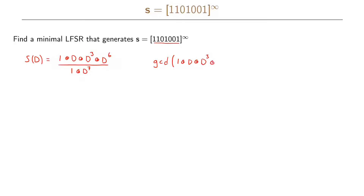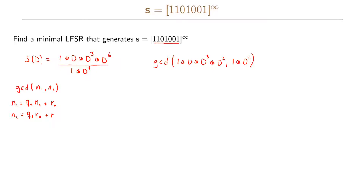Before, we saw how to find the greatest common divisor of integers, and now we want to do the same thing but for polynomials. Recall that for integers we wanted to find the GCD of n1 and n2, where n1 was larger than n2. In the first step we divided n1 by n2 to write n1 = q0·n2 + r0, then divided n2 by r0 to write n2 = q1·r0 + r1, and continued in this way.